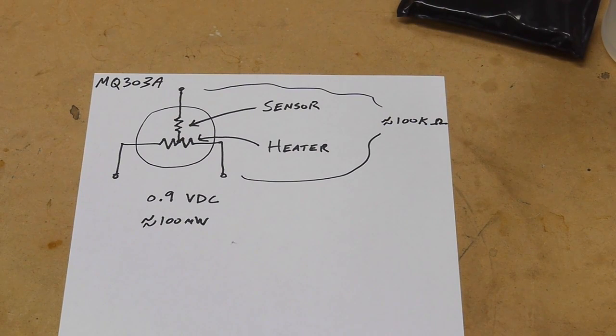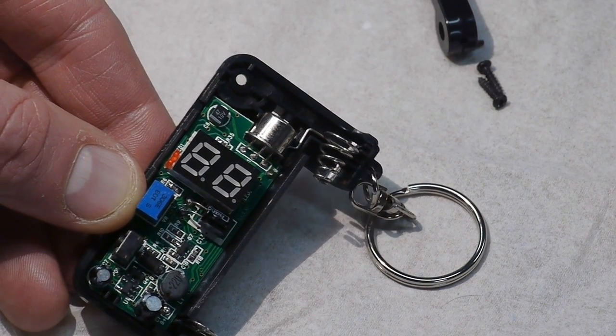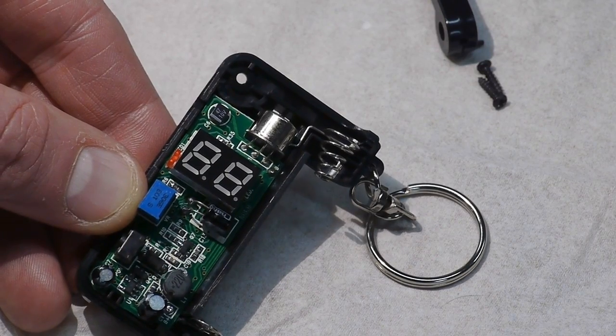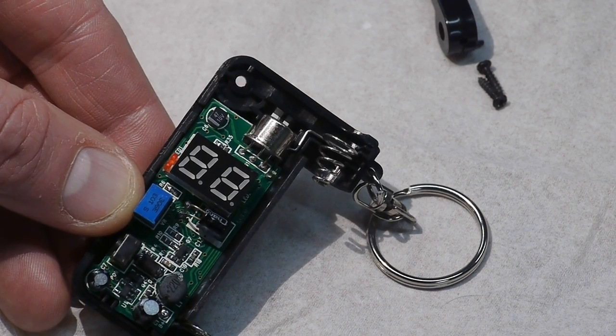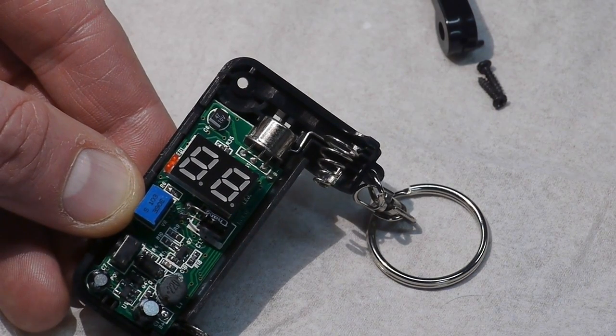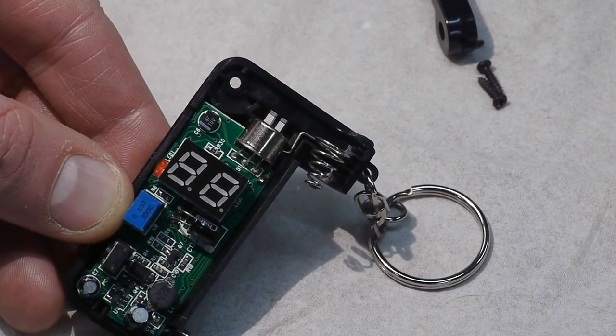The data sheet indicates that the sensor requires 0.9 volts for the heater and that it takes several minutes to come to equilibrium so that you can actually start measuring. But in a product like this, it wouldn't really work to wait a few minutes for this to warm up. I think the manufacturer realized that, so the data sheet says that you can also give it two volts for about 10 to 15 seconds and then back down to 0.9 volts. That will ensure that the thing is hot enough. That's what they're doing here, and that's why it has that 15 second countdown when you start the device.